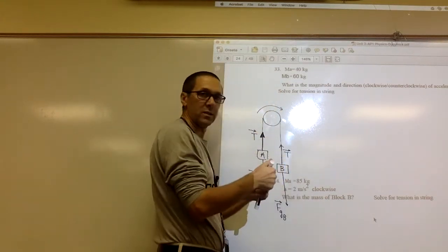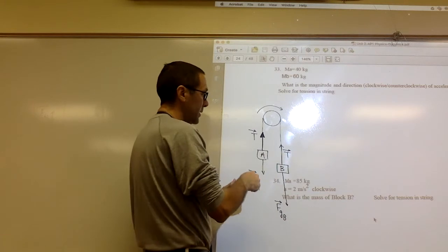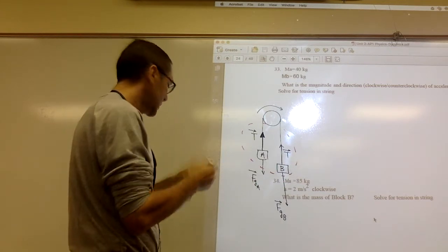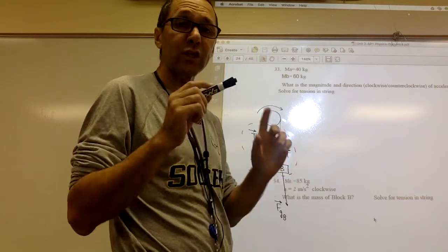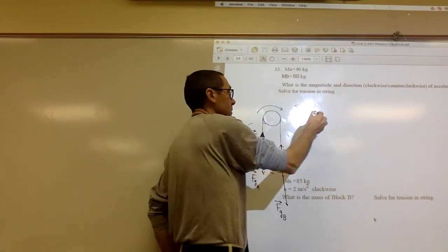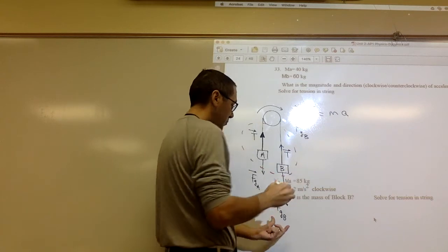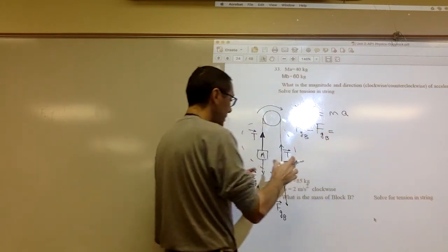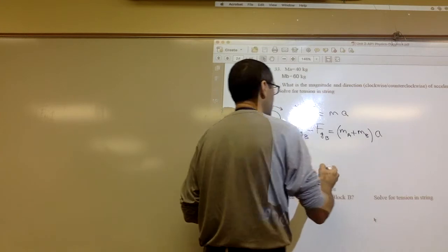I'm going to think of both objects as one system — A and B together. The reason is I don't want to deal with the tension. If I pick both as one, the tension becomes an internal force. When we write Newton's second law, we're only concerned about external forces. So the sum of external forces equals ma. The only force trying to make the system accelerate is fg_B, and what's holding it back is the weight of A, fg_A.